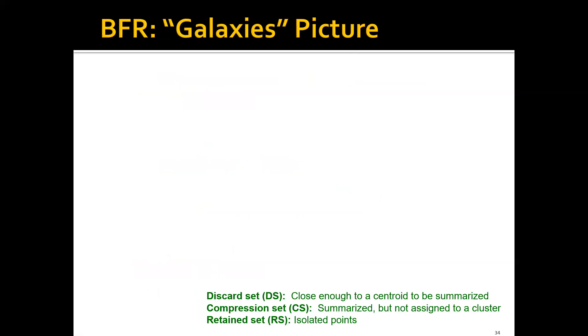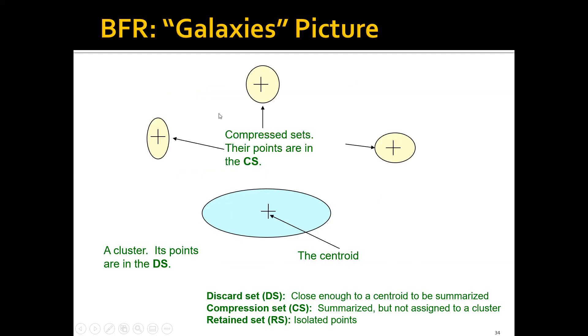More concretely, let's look at this example. We have three sets: DS, CS, and RS. If one point is actually very close to the centroid, then this point will be in the DS and will be absorbed into this cluster and discarded. And these are the mini clusters - all points that are close to the centroid of these mini clusters will be put in the CS. And of course, there will be isolated points which are then put in the RS, the retained set.